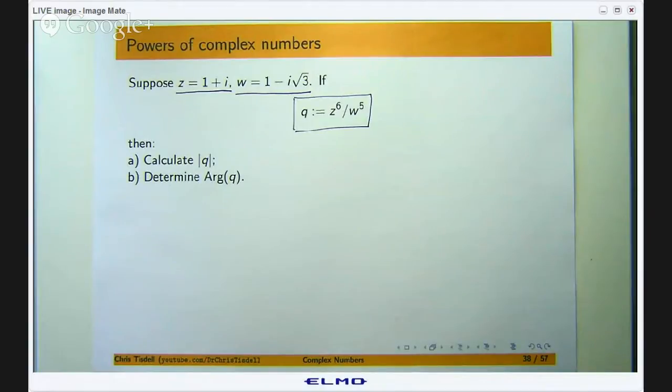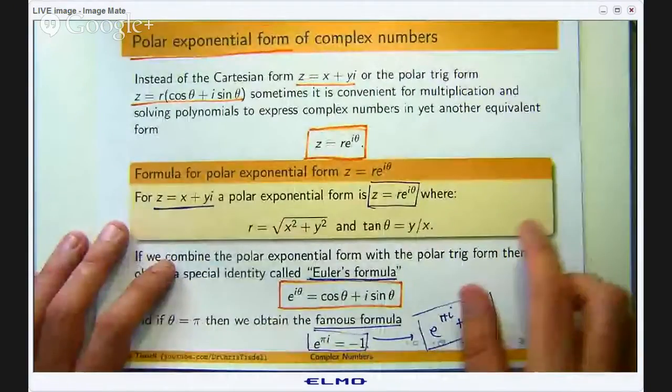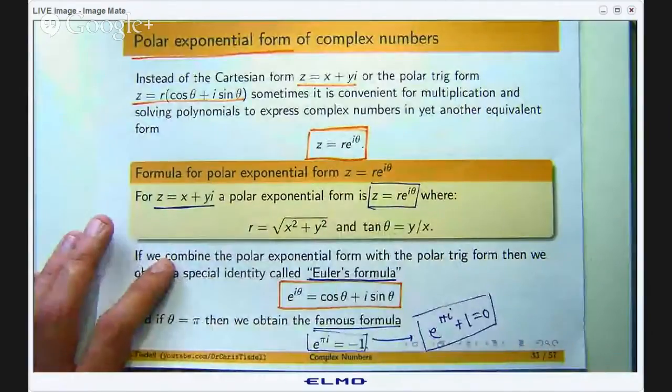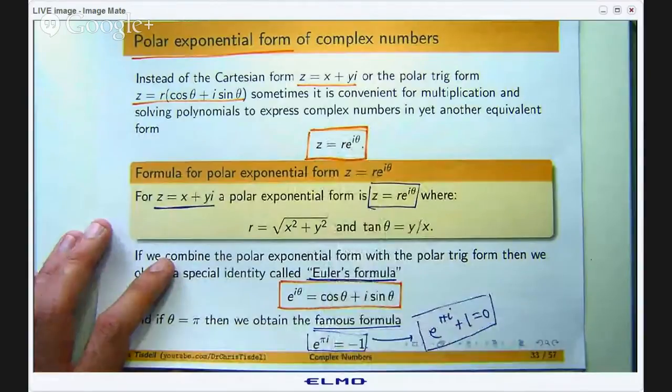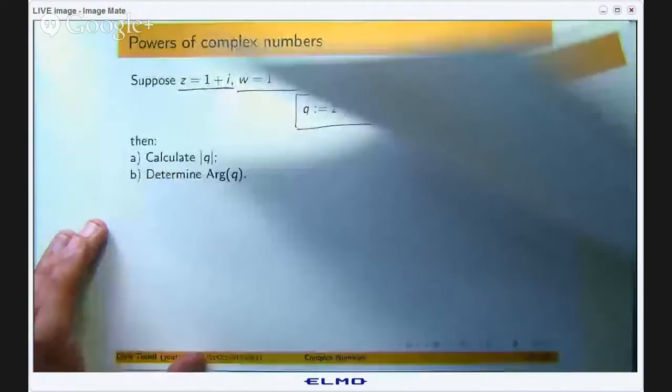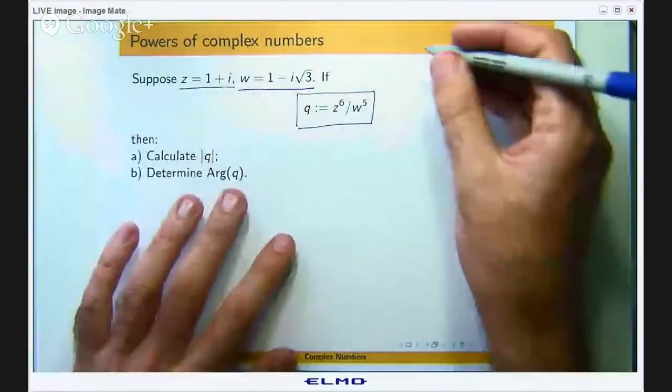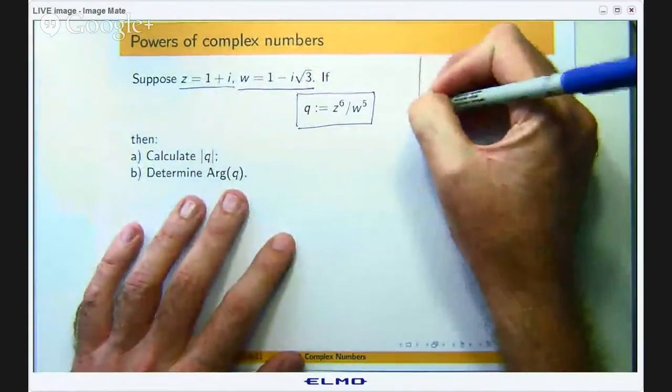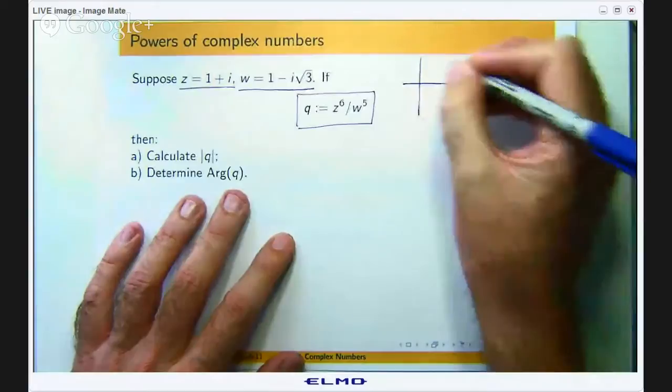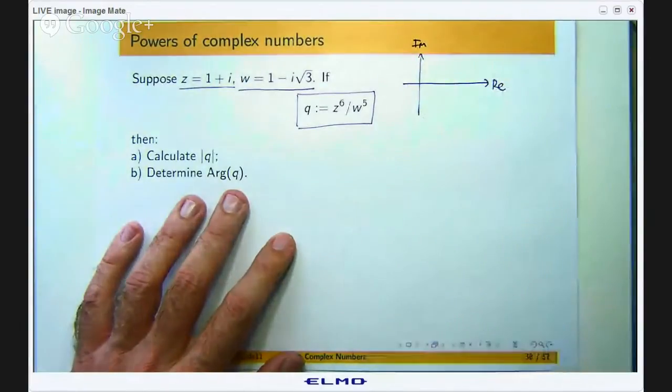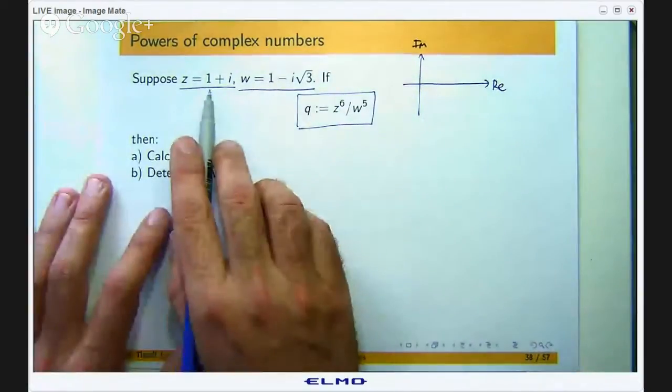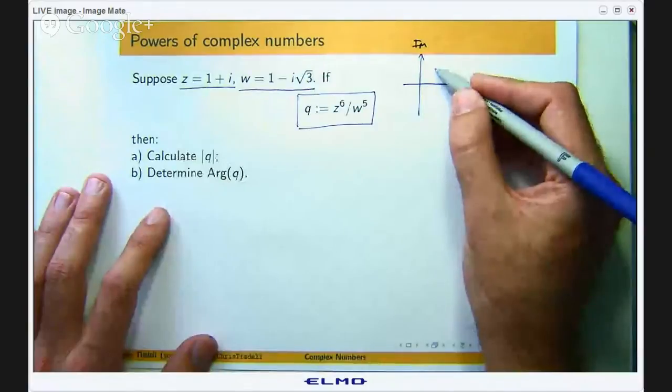The ideas we are going to use will involve the polar exponential form. This is the polar exponential form: r is a distance or a length called the modulus and θ is an angle. Let us draw a picture of these two complex numbers on the same complex plane. Here we have got the imaginary axis, here the real axis. Let us plot z first, 1 plus i. So we go one unit here and one unit up there.